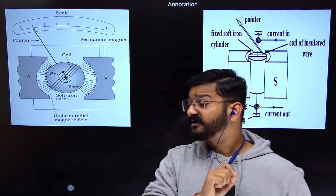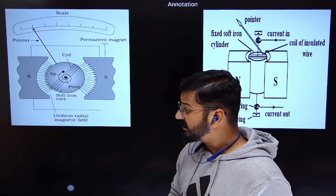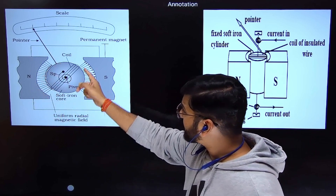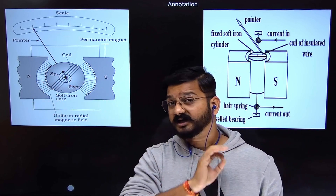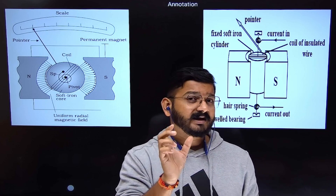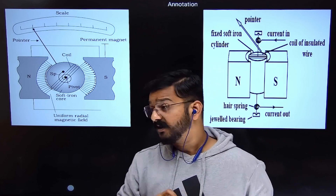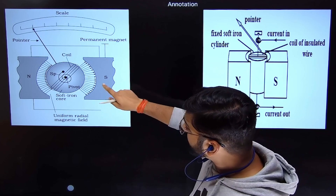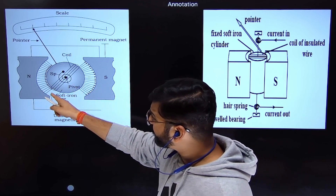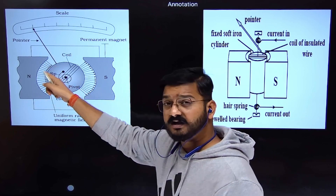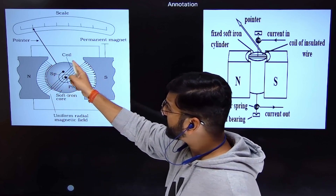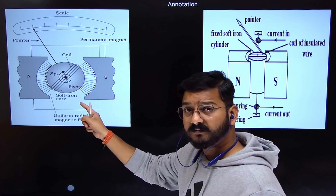The second important concept is: why is the shape of the north and south poles concave? Because due to the concave shape of the north and south poles, the magnetic field produced will be radial — meaning the magnetic field will be along the radius vector of the coil.